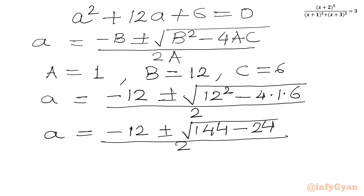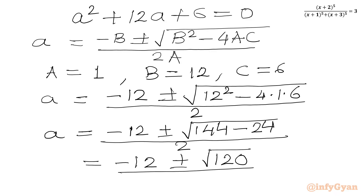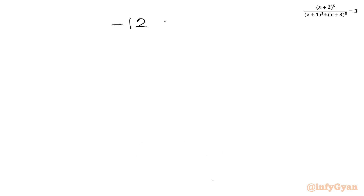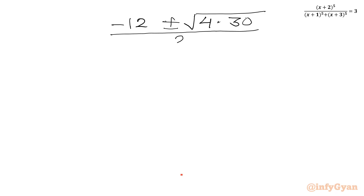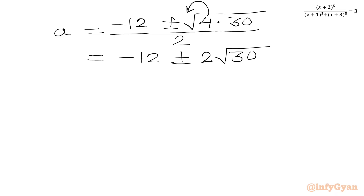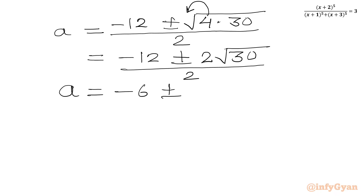Now 144 - 24 = 120, and 120 = 4×30, so √120 = 2√30. Therefore A = (-12 ± 2√30) / 2 = -6 ± √30. Since √30 < 6, both solutions are negative.